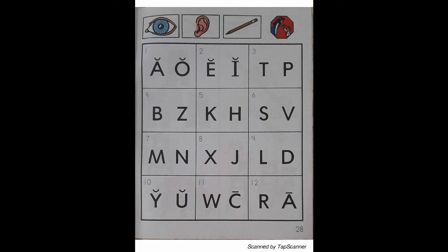Look at the letter in box 7. Listen as I say the sound of the letter: "M" — Mule — "M". With your pencil, circle the letter that reads "M".